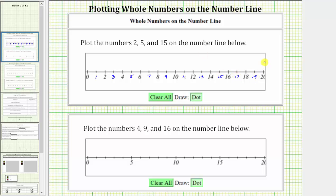Having these extra labels does make it much easier to plot the numbers 2, 5, and 15 on the number line. The number 2 is located two units to the right of zero here. Five is located five units to the right of zero, which is located here.